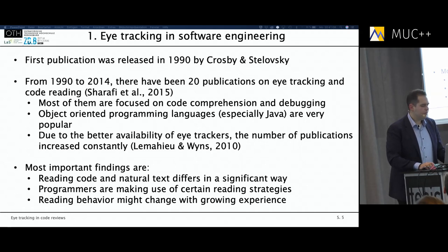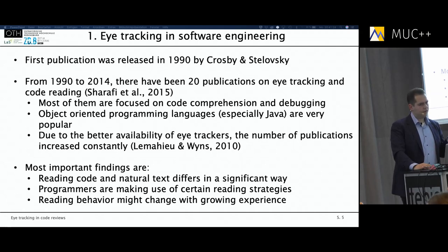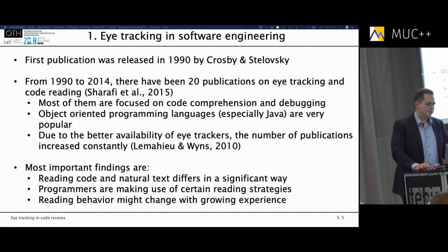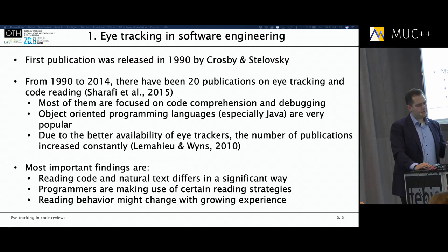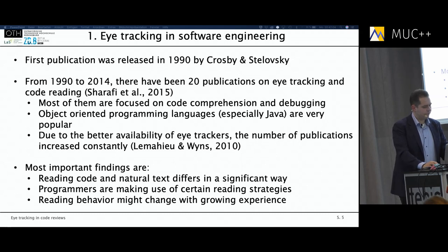If we take a look at the current state of research in eye tracking, the first publication regarding eye tracking and code reviews was made in 1999 by Crosby and Zalovsky. A literature review back in 2015 by Zalovsky found that until 2014 there had been 20 publications regarding eye tracking and code reviews. Most of these studies are focused on code comprehension and debugging tasks, and most stimuli use object-oriented programming languages such as Java. C++ and procedural languages like C are not really well surveyed — there is still a bright gap to fill.